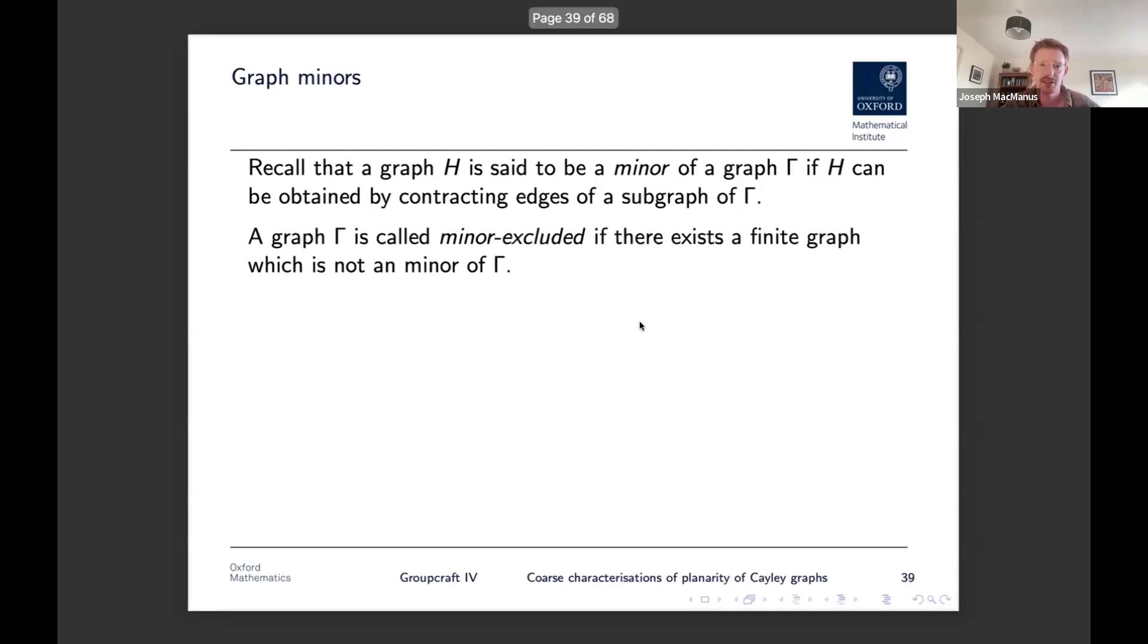So if any of you haven't studied much graph theory, then you should recall that a graph H is said to be a minor of another graph gamma if H can be obtained by contracting edges of some subgraph of gamma. So you should recall maybe Kuratowski's theorem that says the graph is planar if and only if it has no K5 or K33 minors. These are a very important object in graph theory. And it turns out that, well, I've got ahead of myself. Let's say that a graph is called minor excluded if there exists a finite graph which is not a minor of it. So this definition only really makes sense for infinite graphs. So planar graphs are, of course, minor excluded.